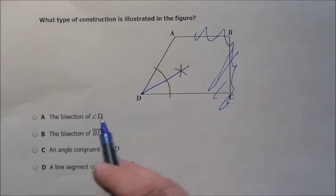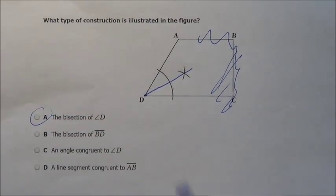It's a bisection of the angle. Bisection of angle D, boom, choice A, right off.